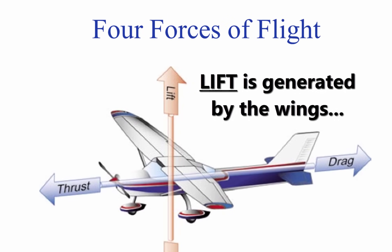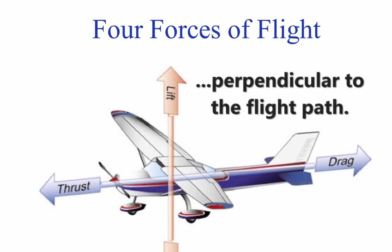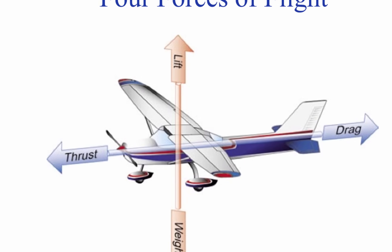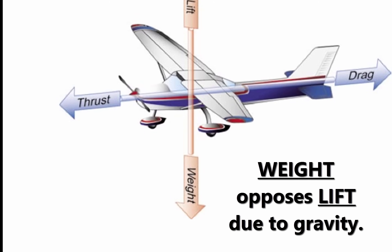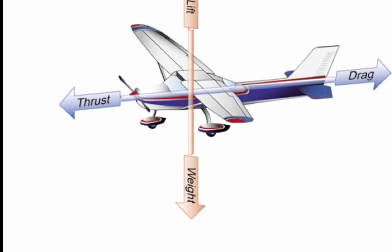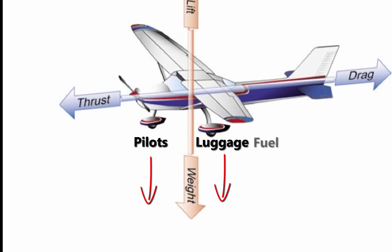Lift is generated by the dynamic effect of the air acting on the wing and acts perpendicular to the flight path. Weight opposes lift and is caused by gravity. Everything in the plane – pilots, luggage, fuel, and even the plane itself – are pulled down by gravity, causing the aircraft to have weight.